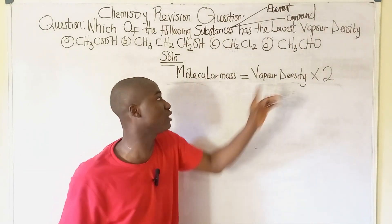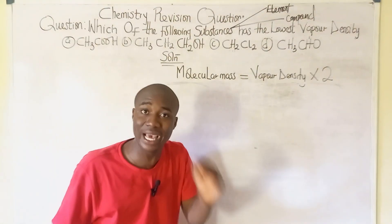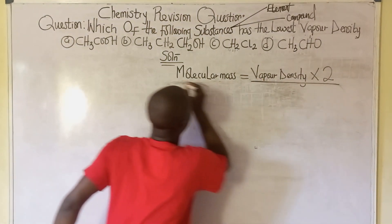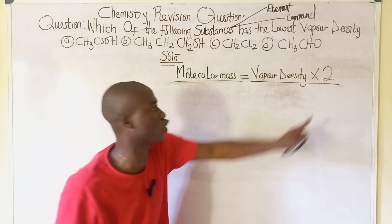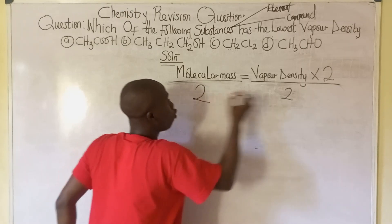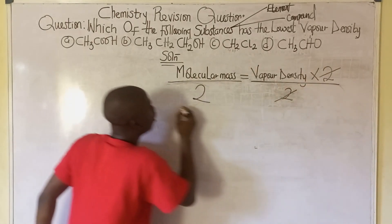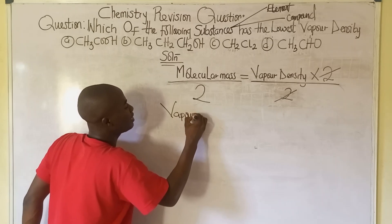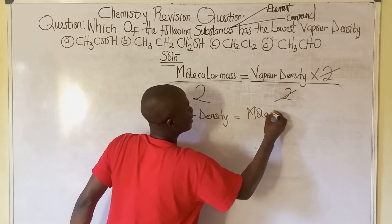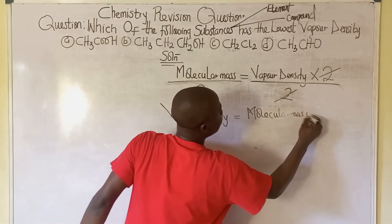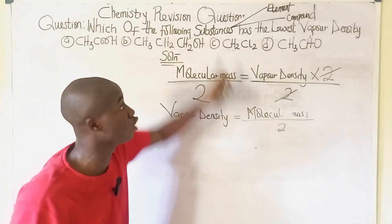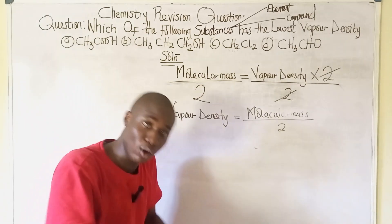What we have to do next is divide both sides of the equation by the coefficient of vapor density, which is two. Two cancels two, so vapor density equals molecular mass divided by two. This is the formula we will apply to solve for vapor density and find the lowest one.